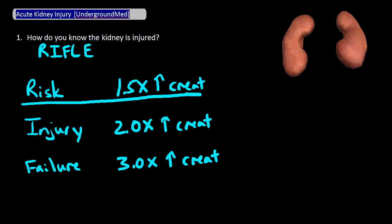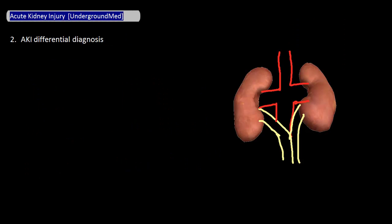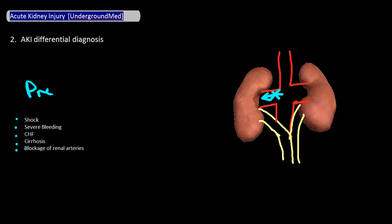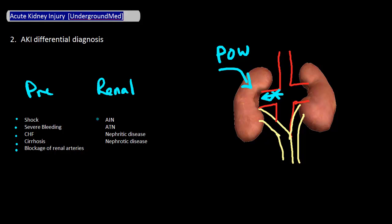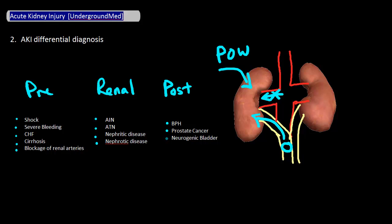Now that you know your patient has AKI, you want to figure out what's causing it. The differential diagnosis is fortunately pretty straightforward. It includes pre-renal causes — decreased perfusion to the kidneys — such as shock, severe bleeding, CHF, cirrhosis, or blockage of renal arteries. Renal causes, meaning direct damage to the kidneys, such as acute interstitial nephritis, acute tubular necrosis, or nephrotic disease. Or post-renal causes — something after the kidneys in the urinary tract — most often an obstruction causing urine to back up into the kidneys, such as BPH, prostate cancer, or neurogenic bladder.